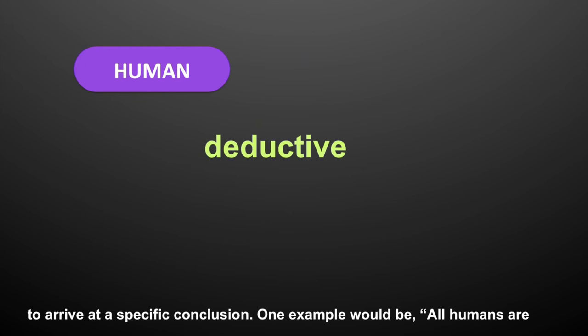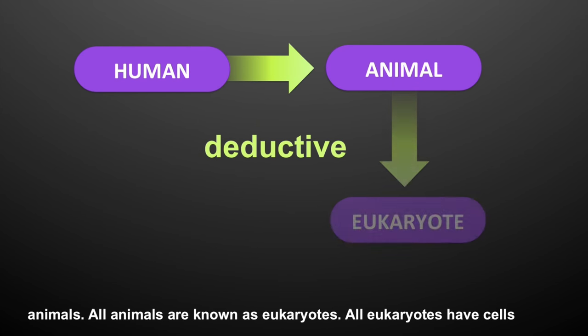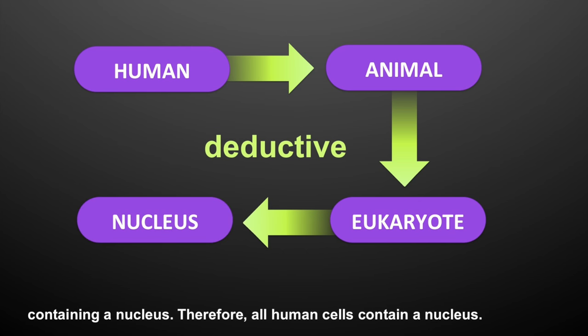One example would be: all humans are animals, all animals are known as eukaryotes, all eukaryotes have cells containing a nucleus, therefore all human cells contain a nucleus.